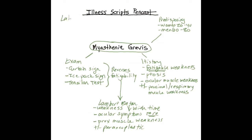Going back to myasthenia, lab tests will often focus on antibodies. The classic antibody is the anti-acetylcholine receptor antibody, which is positive in about 80% of these patients. In seronegative patients with high pretest probability for myasthenia, the next most common antibody — and the one increasingly being tested on the boards — is anti-muscle-specific kinase, or anti-MuSK antibody. The imaging test most important to know is chest imaging, either chest X-ray or better yet a CT, to look for thymoma. Do not forget to check for a thymoma in your myasthenia patients, as resection of the thymoma very often leads to cure.